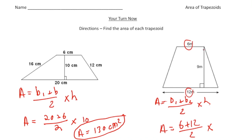And notice again, the height always makes a right angle. There's the box right there with the base. So that's going to be times nine. So six plus twelve is 18. 18 divided by two is nine, and nine times nine is 81. So the area of this trapezoid is going to be 81 square meters. And there's the answer.